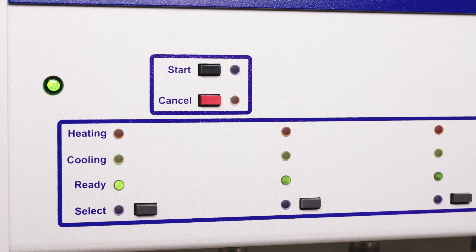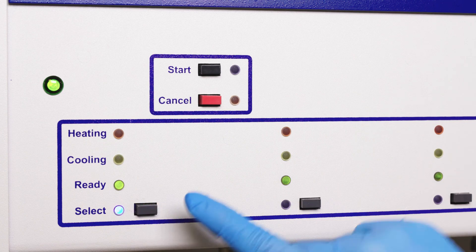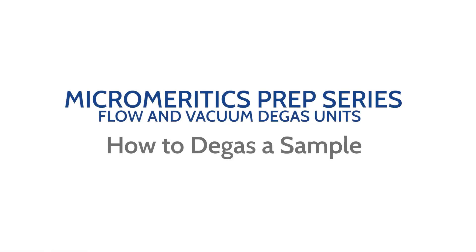After loading a sample tube on the desired port, press select and once the blue light is on, press start. Now you are ready to degas a sample for a physisorption analysis on the Micromeritics preparation systems using